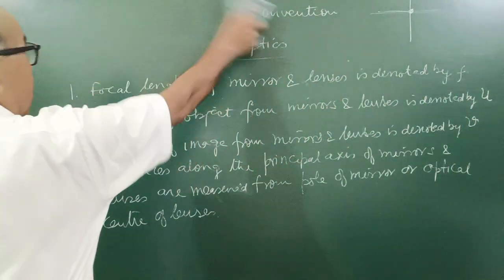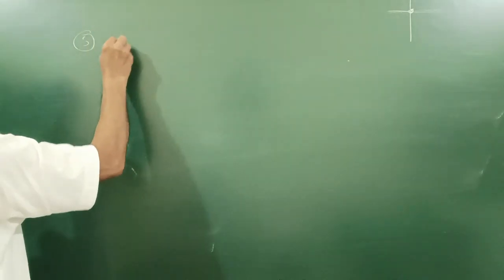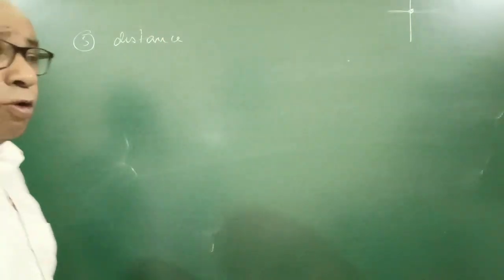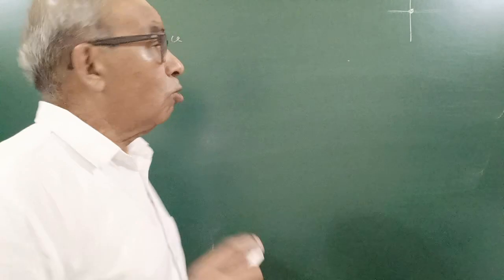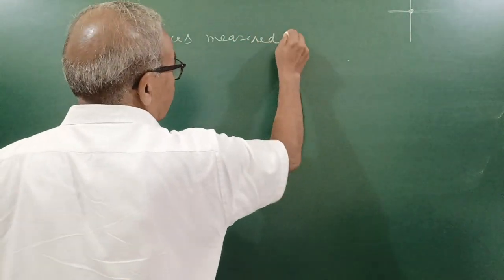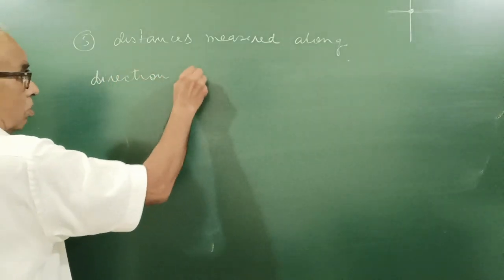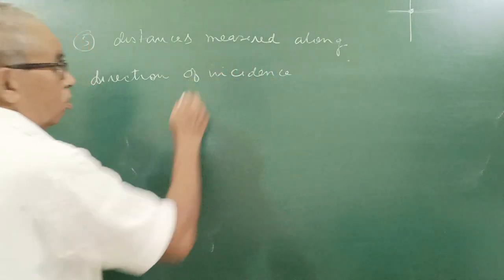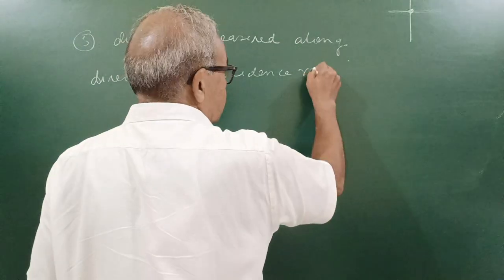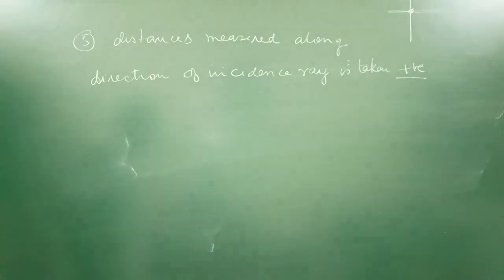Now, number next. Five. Number five of important is distances. So, they will measure from pole of the mirror or optical center of lens. Distances measured along the direction of incidence ray is taken positive. And opposite to them negative.